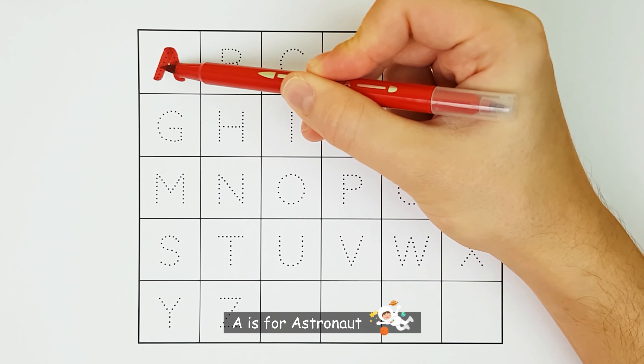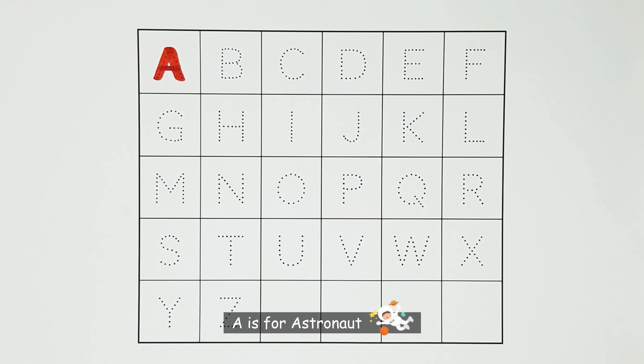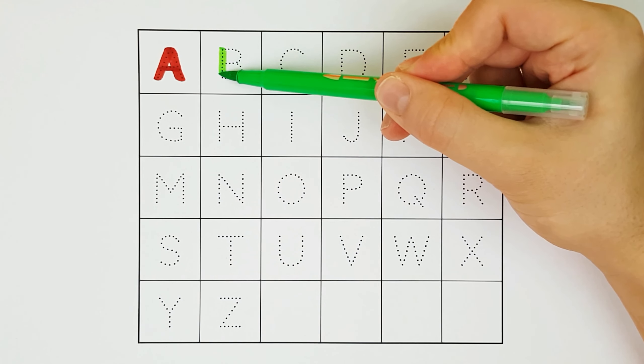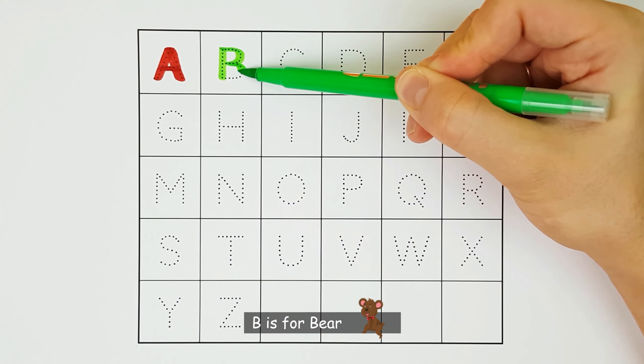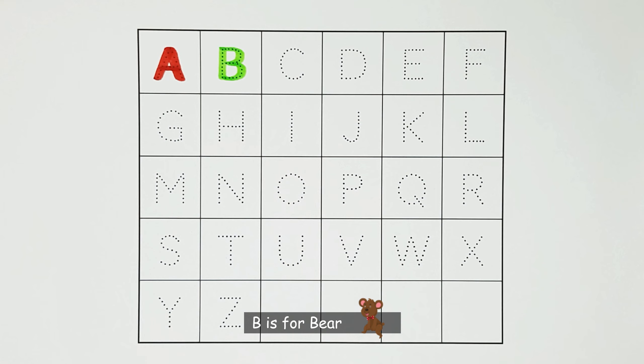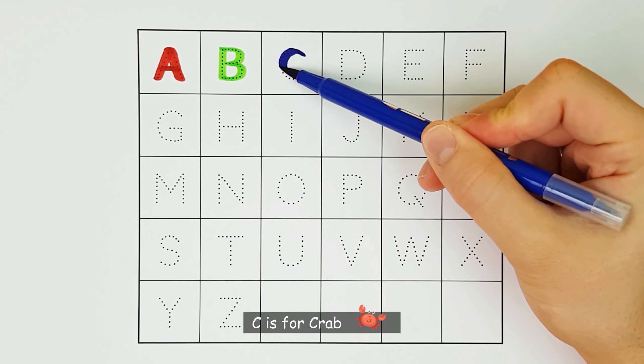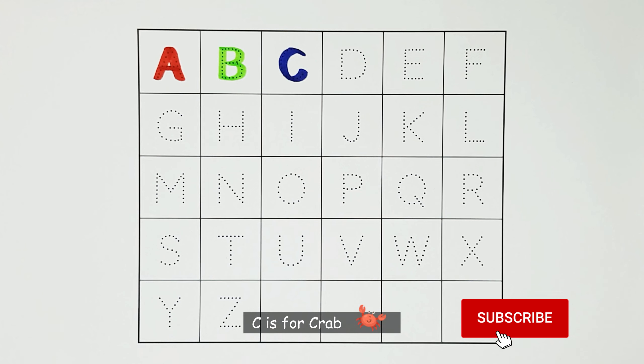A. A is for astronaut. A. B. B is for bear. B. C. C is for crab. C.